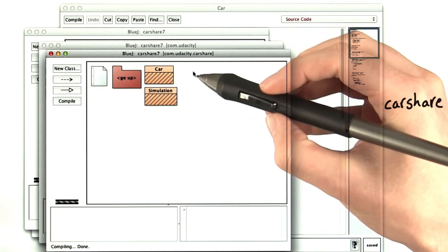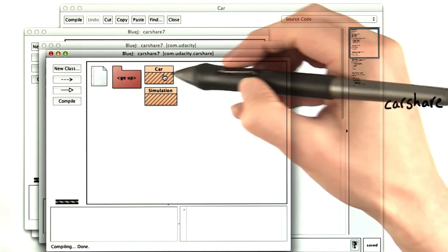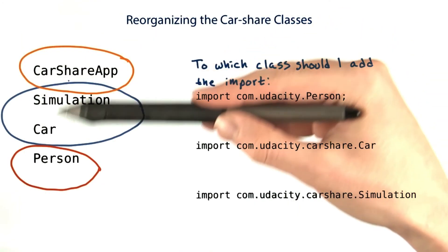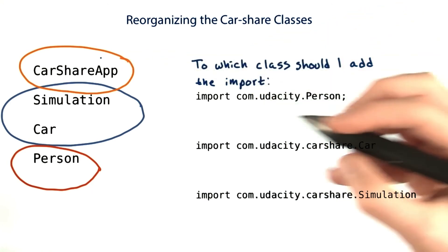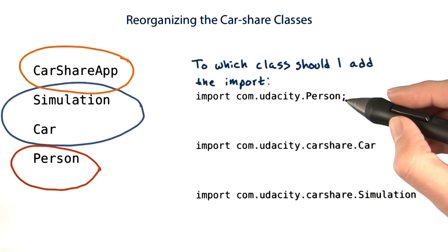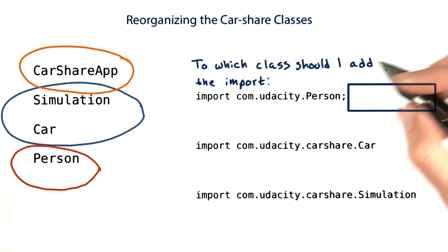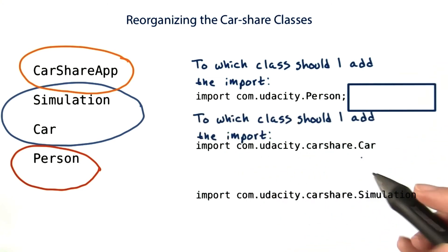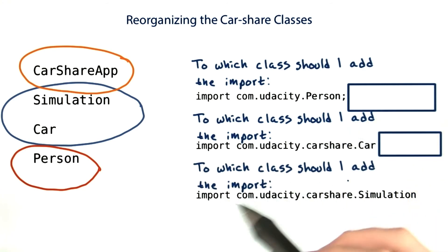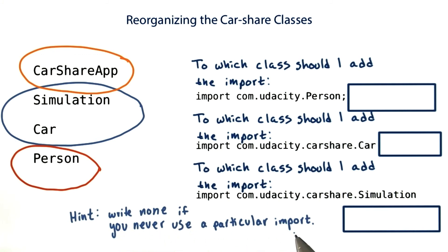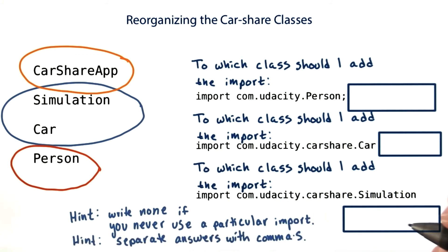Right now car isn't compiling. What import statements would you need to add to this project to make it compile again? Go ahead and reorganize all of the classes into the right packages. Then to get the car share app running again, to which class should I add the import com.udacity.person? Write 'none' if you never need to import this. To which class should I add the import com.udacity.carshare.car? Simulation — and remember, write 'none' if you never use a particular import statement, and separate answers with commas if two classes use the same import.